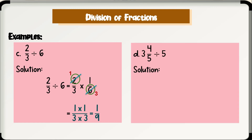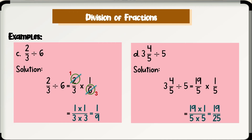Example letter D: 3 and 4 over 5 divided by 5. First, transform the mixed number 3 and 4 over 5 into an improper fraction — that equals 19 over 5. Next, change the operation to multiplication and get the reciprocal of 5, which is 1 over 5. Since the cancellation method is not applicable here, multiply the numerators 19 and 1, giving 19, over 5 times 5 for the denominator, which is 25. Thus, 3 and 4 over 5 divided by 5 is equal to 19 over 25, and this is already in its simplest form.